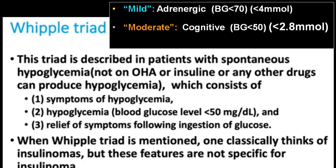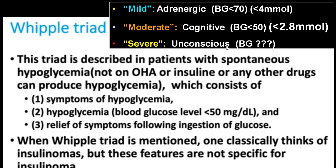Mild: adrenergic symptoms are present, blood sugar less than 70. Moderate: adrenergic and neuroglycopenic symptoms are present, usually blood sugar less than 50. In severe, the person has altered level of consciousness — almost unconscious — where blood sugar will be very low. That is classical Whipple's triad severity classification.